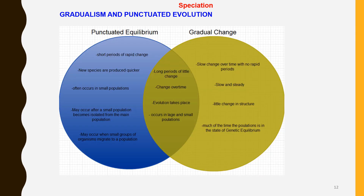The figure here highlights the comparisons between the two theories of speciation, gradual and punctuated. Thank you.